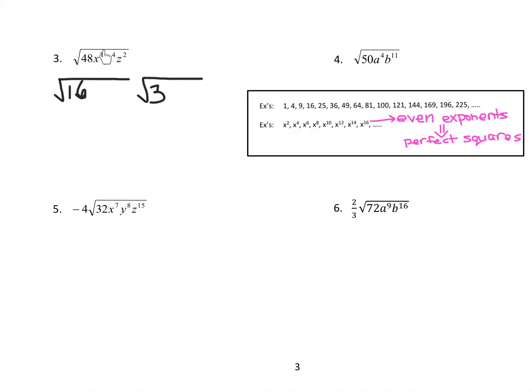Now we have x to the 5th. This has an odd exponent, so it's not a perfect square. So x to the 5th would fall here, and as we work our way back, x to the 4th would be the biggest perfect square that we can pull out. So x to the 4th is going to go in our perfect square radical. We have a leftover x, which goes in the leftover radical, because x to the 4th times x to the 1st gives us x to the 5th.